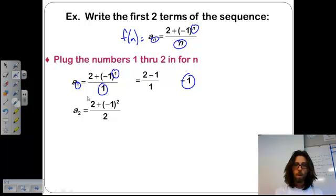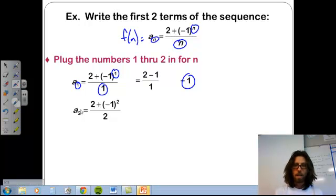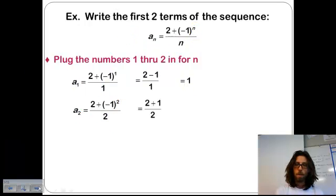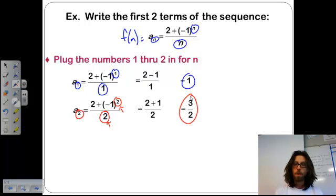And then we just evaluate it out, and we get that the first number in this sequence is 1. Now, moving on to the next one, if we wanted to do a sub 2, well, same thing here. Instead of an n, we're going to put a 2 wherever that n was. It's basically just a placeholder. And then we could evaluate it out, and we find that 3 over 2 is the second number in our sequence.